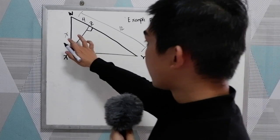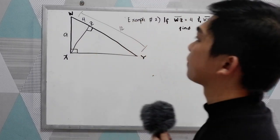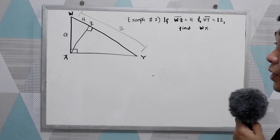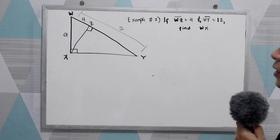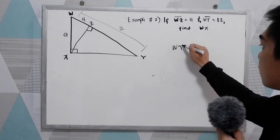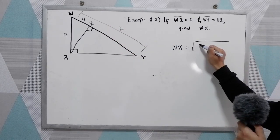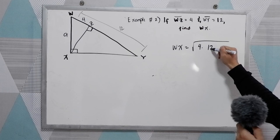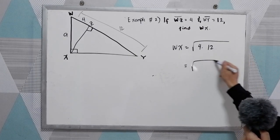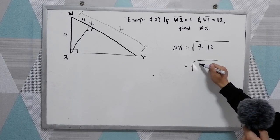Now, we are not going to use X for that because we have our angle X here. We are going to use A. Following our theorems, we have three similar triangles here. So WX is equal to the square root of 4 times 12. We now have square root of 4 times 12, that is 48.